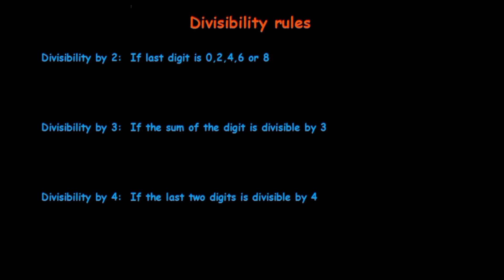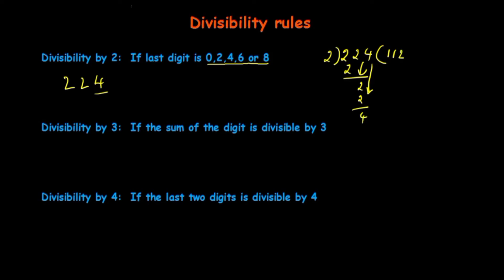For example, if you have a number like 224, the last digit is 4. According to the divisibility rule by 2, if the last digit is 0, 2, 4, 6, or 8, then the number is divisible by 2. You can verify this by dividing 224 by 2: two ones are 2, bring down 2, two ones are 2, bring down 4, two twos are 4, remainder is 0. So 224 is divisible by 2.